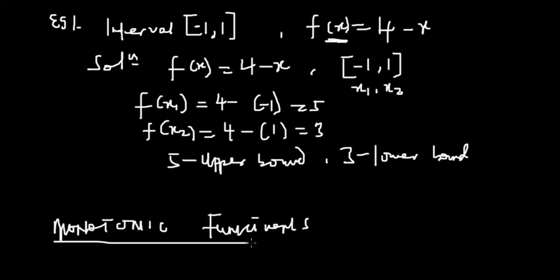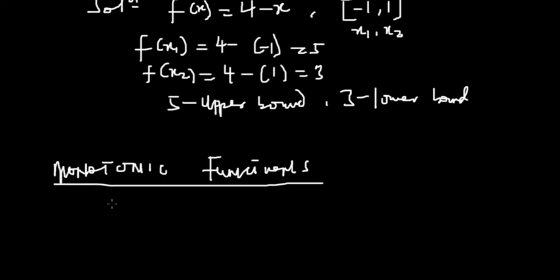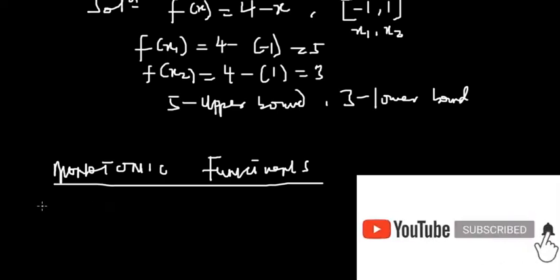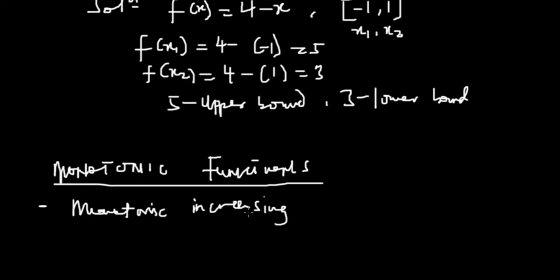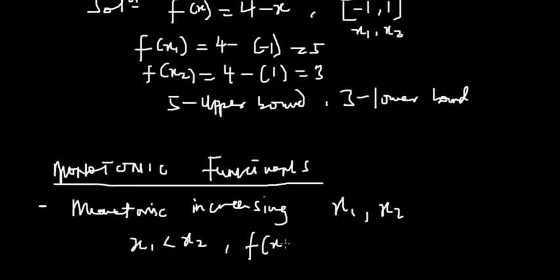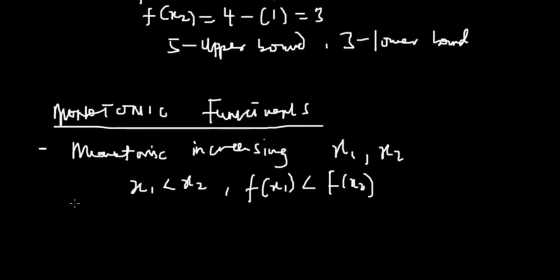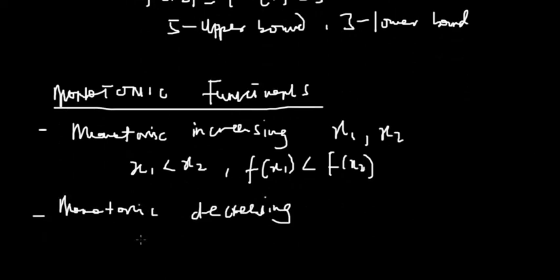Now let's treat monotonic functions. For monotonic functions you have monotonic increasing and monotonic decreasing. For monotonic increasing, you are given values x1 and x2. X1 is always less than x2. Once you substitute and find that f(x2) is greater than f(x1), that is what we call monotonic increasing.